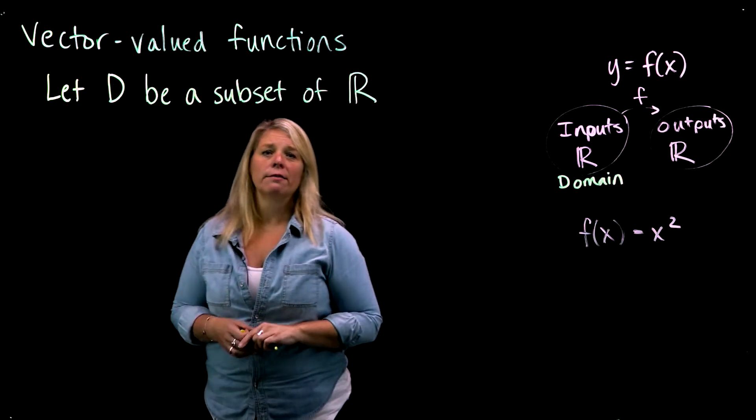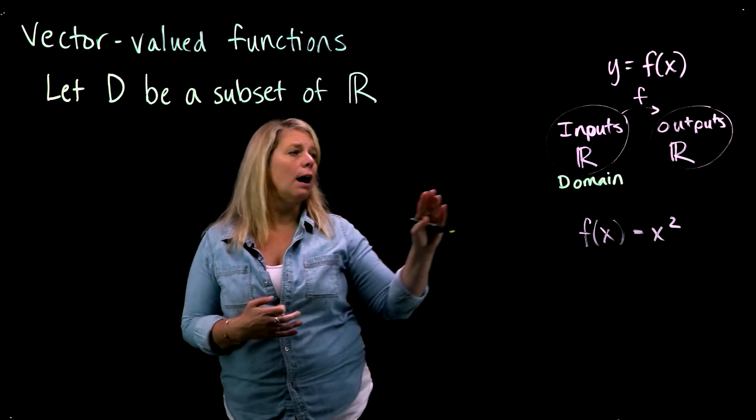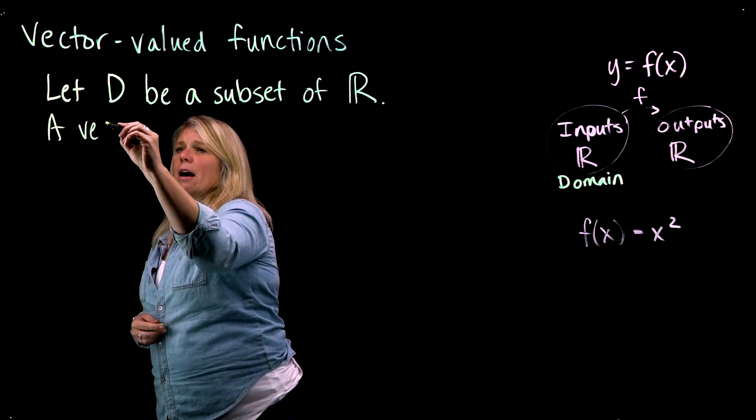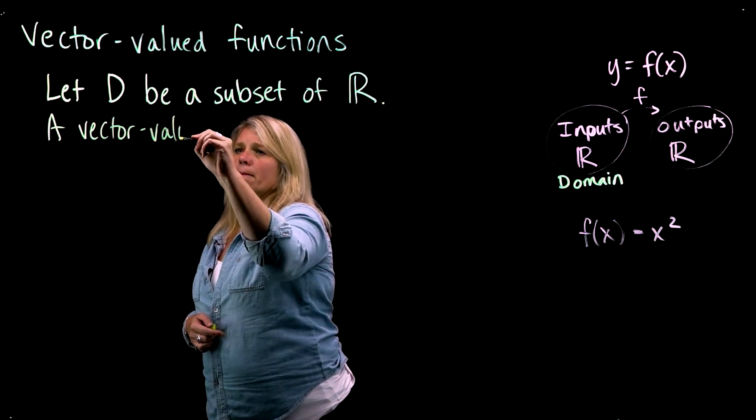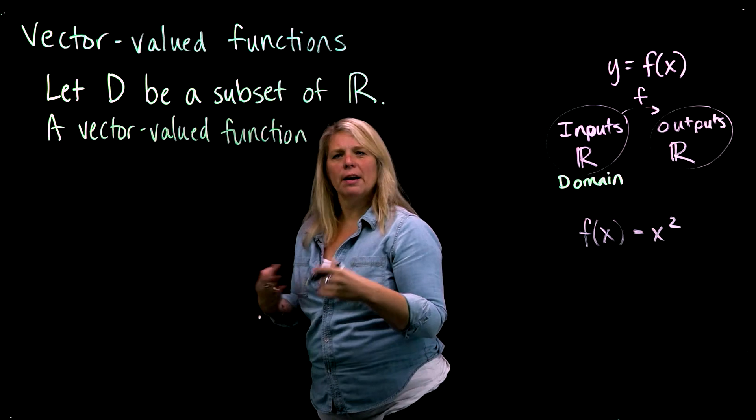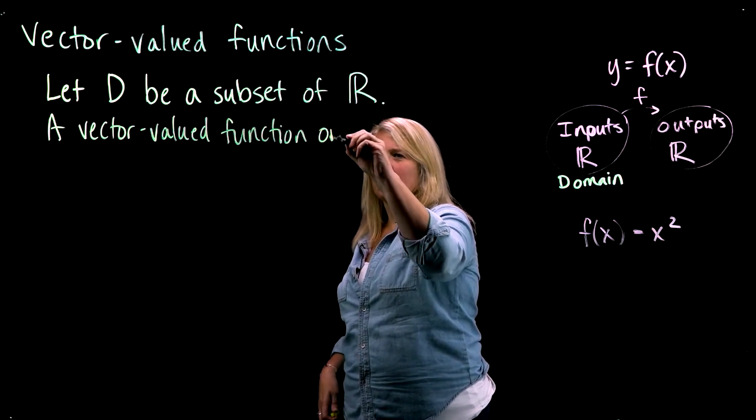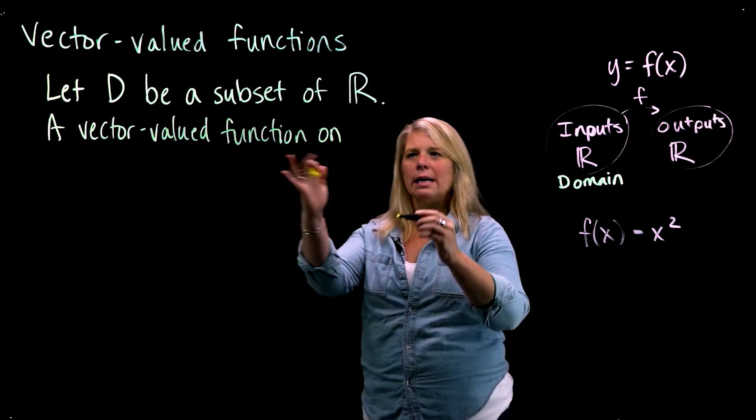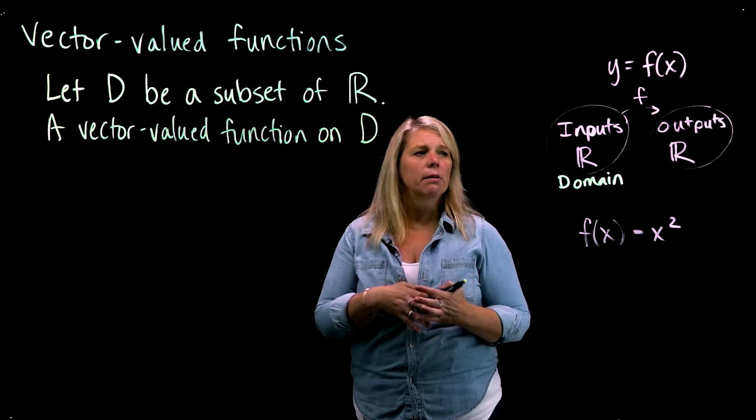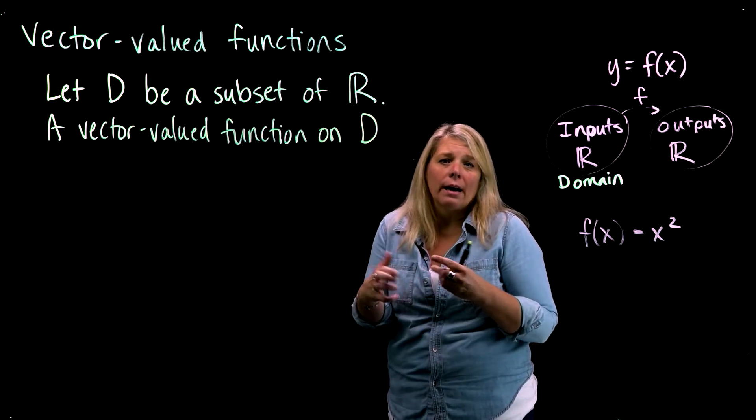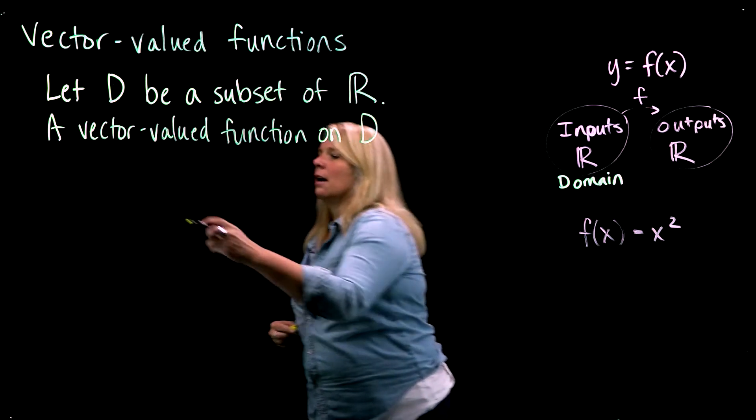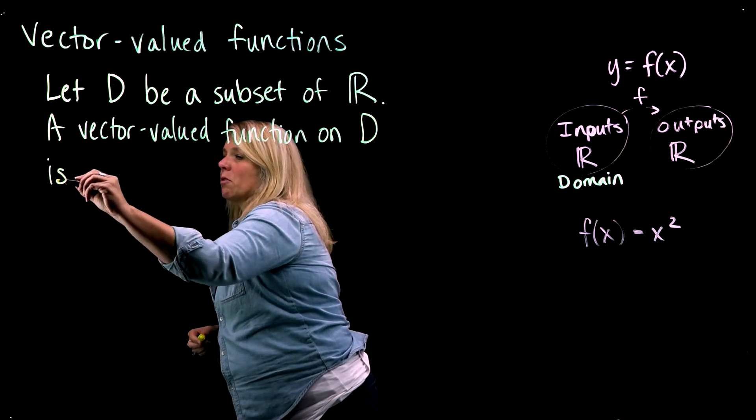So the idea with a vector-valued function is that we start with some domain that is some subset of the real numbers. A vector-valued function on D—when we talk about functions doing something, they're increasing, they're decreasing, they're continuous or whatever, we talk about them doing that on a set. A function on the set D is a mapping, or sometimes we might say a correspondence.